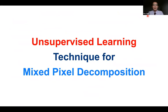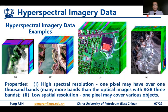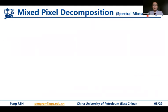I will present the first technique: an unsupervised learning technique for mixed pixel decomposition. In this task, we address hyperspectral image data. Hyperspectral images have two properties: high spectral resolution, where one pixel may have over 1,000 bands — many more than optical RGB images — and low spatial resolution, where one pixel may cover various objects. These two properties give rise to the problem of mixed pixel decomposition, also called spectral mixture analysis.